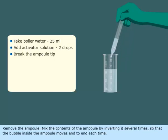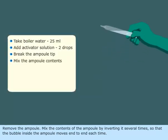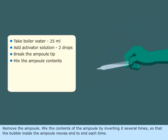Remove the ampoule. Mix the contents of the ampoule by inverting it several times so that the bubble inside the ampoule moves end to end each time.